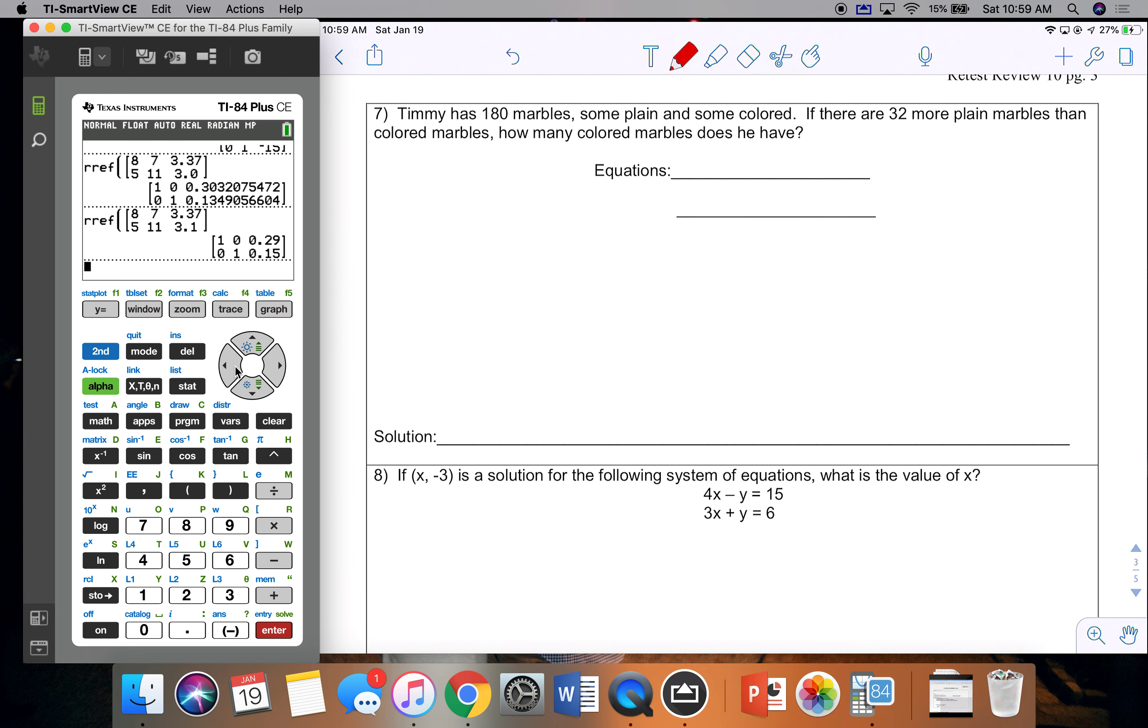Problem 7, Timmy has 180 marbles, some plain and some colored. If there are 32 more plain than colored, how many colored marbles does he have? So first, colored is going to be one of my variables, because that's what they're asking me about. And then the other information that I see, I see some colored and then I see info about plain and colored. So the plain is going to be my other variable.